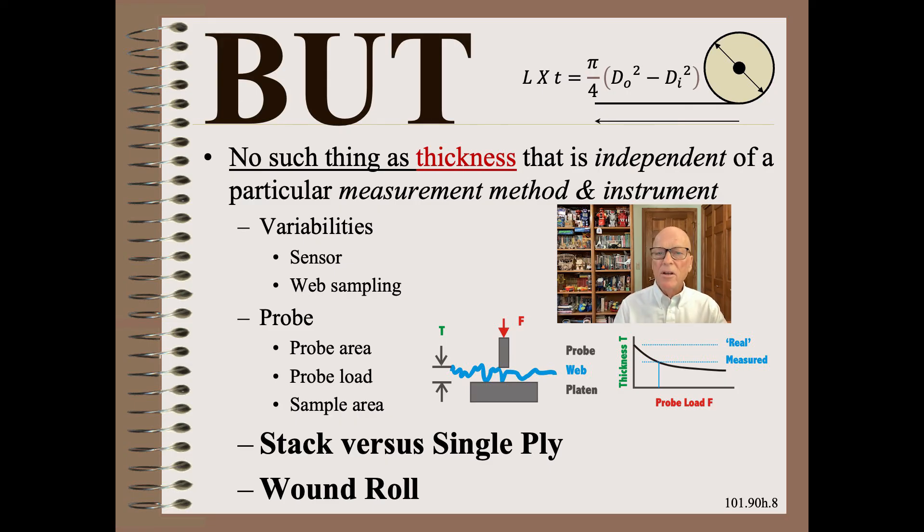One huge area of concern is that most of the lab measurements of thickness are single ply, while the wound roll is more of a stack. Nesting effects of the plies in a stack cause fuzzy materials to appear thinner as a stack, and air entrainment makes smooth materials appear thicker as a stack.